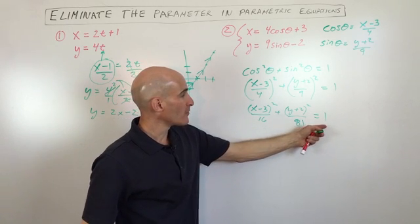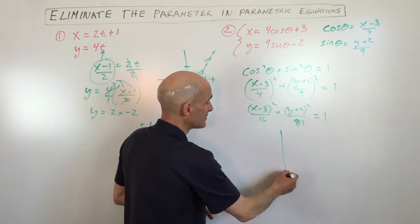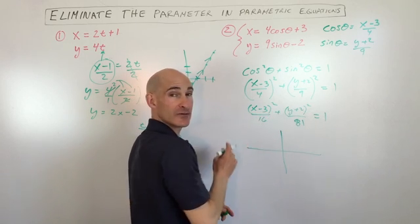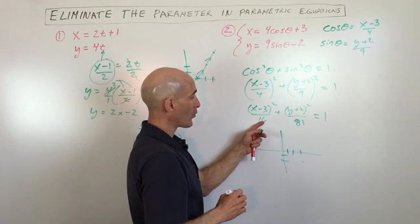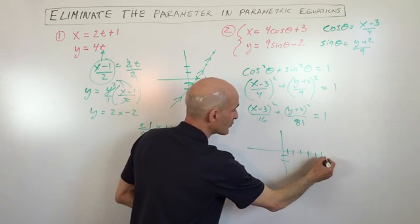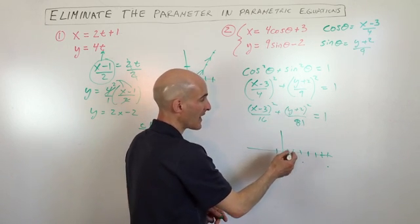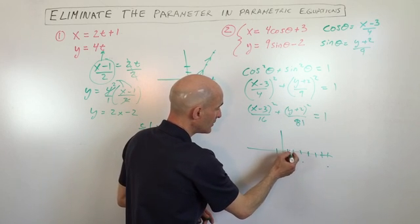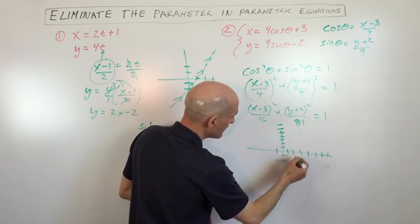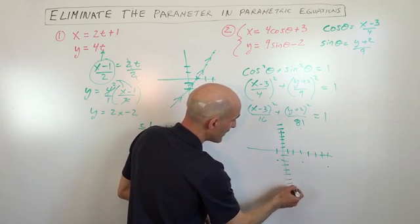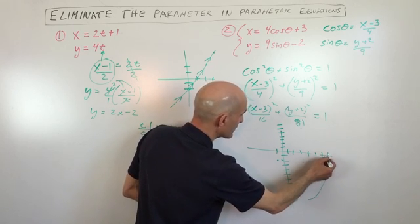This is the equation of an ellipse. Graphing it: the center is at (3, negative 2). In the x direction we go 4 units (square root of 16) left and right. In the y direction we go 9 units (square root of 81) up and down. We can now draw the ellipse.